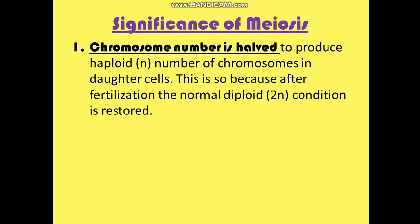Now coming to the significance of meiosis. The first significance — and this is a repetition — is that the chromosome number is halved. This is a big significance of meiosis because haploid number of chromosomes are produced in every daughter cell. This is important because after fertilization, when both sex cells are combining — the testis forming sperms and the ovary forming ova — the sperms and ova combine to restore the normal diploid condition.